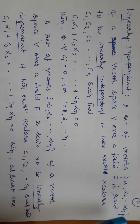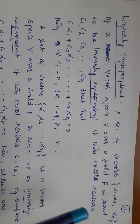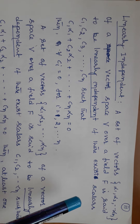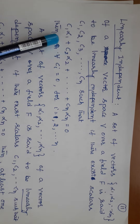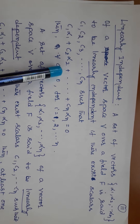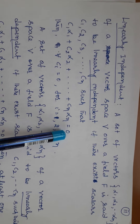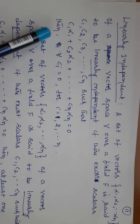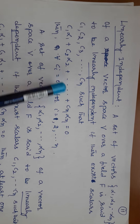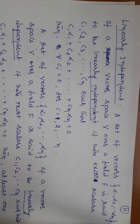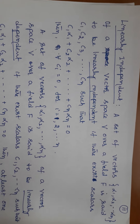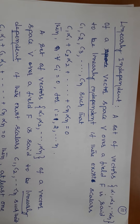Any set of vectors are linearly independent means once you write the linear combination C1 alpha 1 plus C2 alpha 2 plus etc. Cn alpha n equal to 0, then each scalar must be 0. Then we say that these vectors alpha 1, alpha 2, etc., alpha n are linearly independent. Otherwise, linearly dependent.